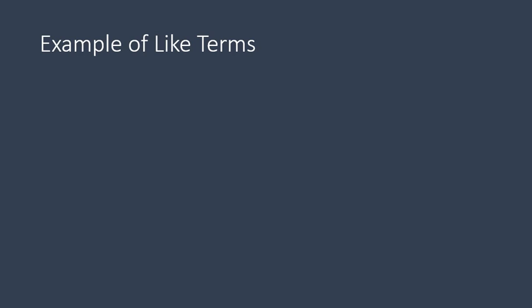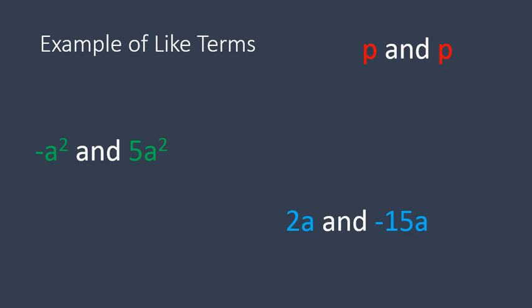Let's go ahead and look at some examples of like terms. Negative a squared and 5a squared. The variable is a squared and it's exactly the same in both terms. P and P. Those are exactly the same variable, exactly the same term.